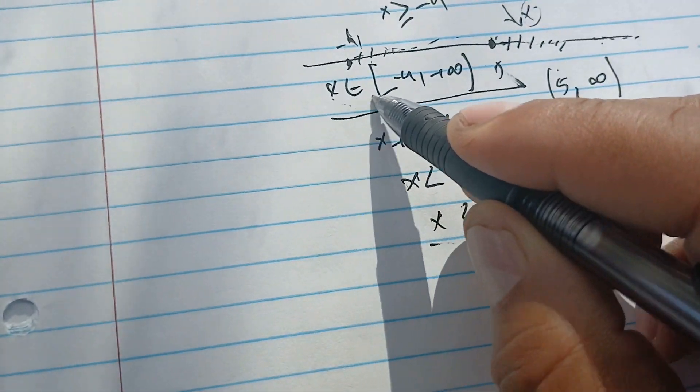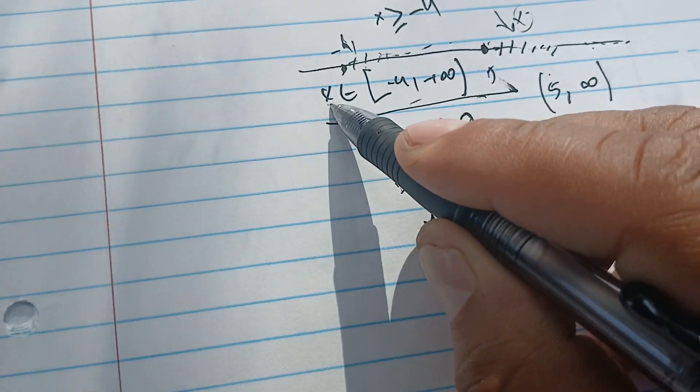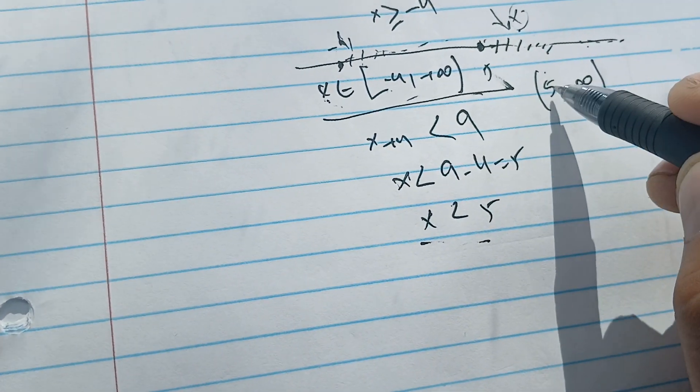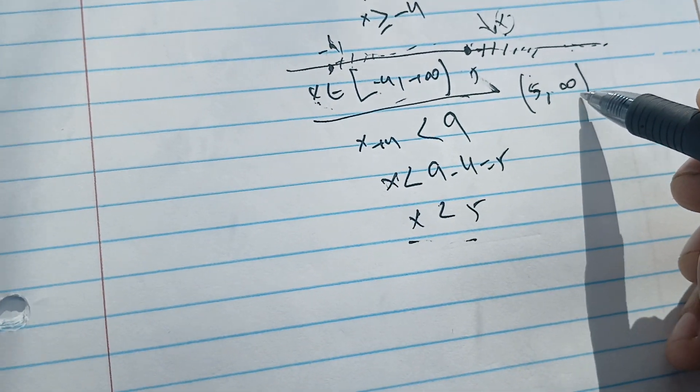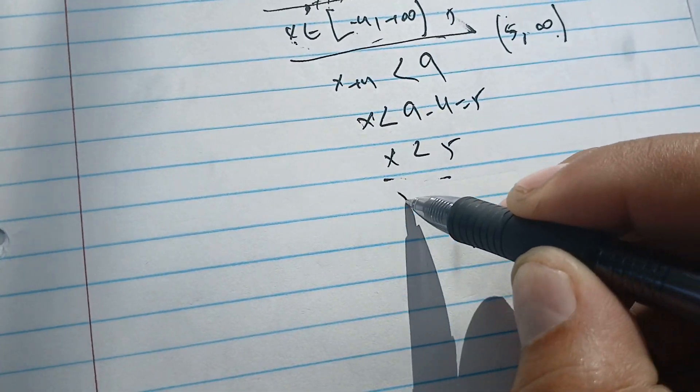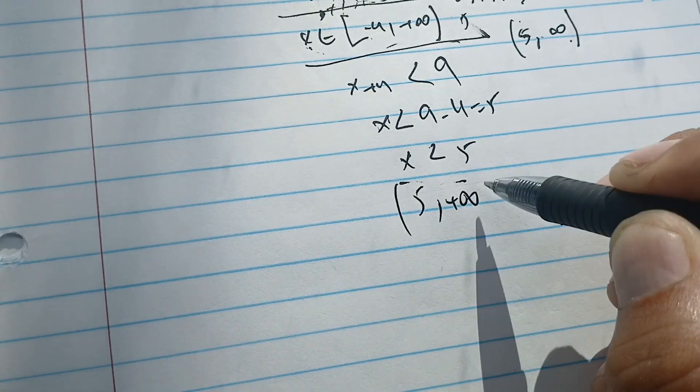So x has to be in this interval minus 4 plus infinity, and x has to be in this interval 5 infinity. We intersect them and we get the interval is 5 plus infinity.